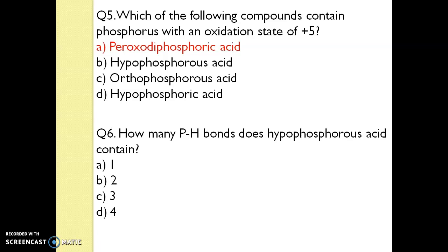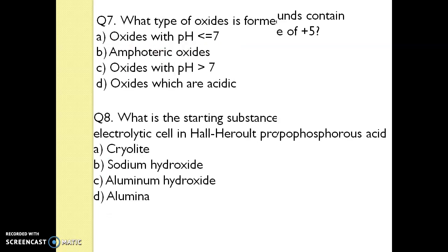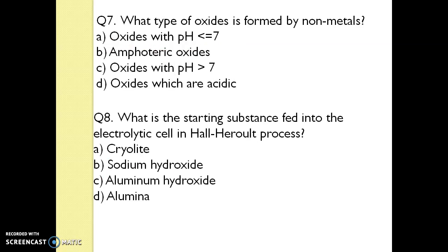Q6. How many P-H bonds does hypophosphorous acid contain? There are two P-H bonds. Q7. What type of oxides are formed by non-metals? Oxides which are acidic — this is your answer.